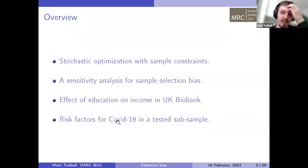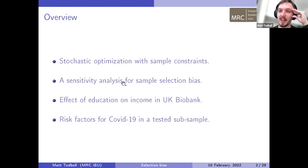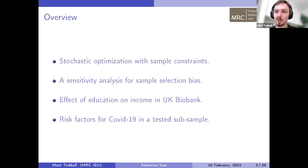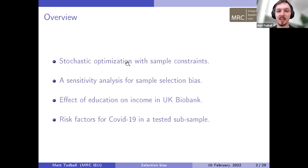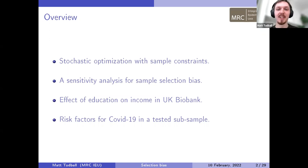I'm giving this talk in reverse of how the paper actually unfolded. It started as something I thought would be quite simple — taking existing ideas for sensitivity analyses for selection bias and incorporating external population information. But I realized that to conduct statistical inference, I needed to treat this as a stochastic optimization problem, and the theory for doing that with sample constraints wasn't developed enough.